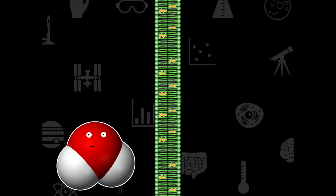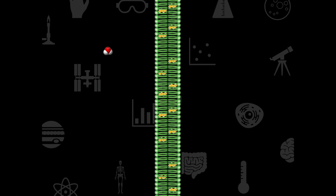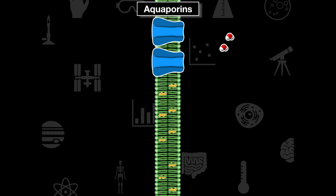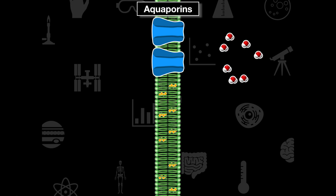Now I want to review water molecules. Remember, water molecules can move through a membrane because they're small enough to fit through the phospholipid bilayer. They can move through the phospholipid bilayer or through protein channels called aquaporins, and these aquaporins allow for faster transport of water molecules through the membrane.